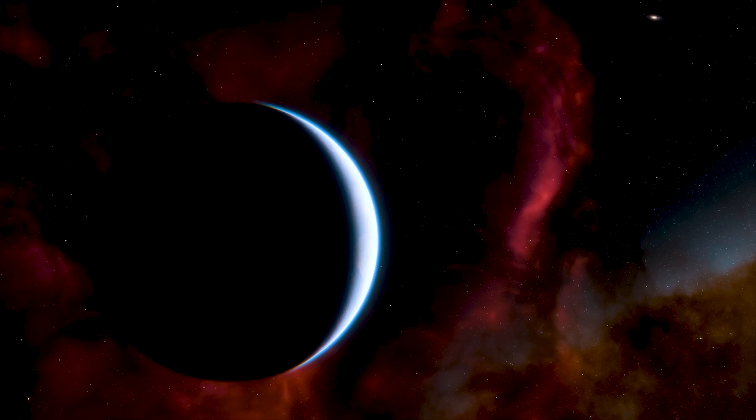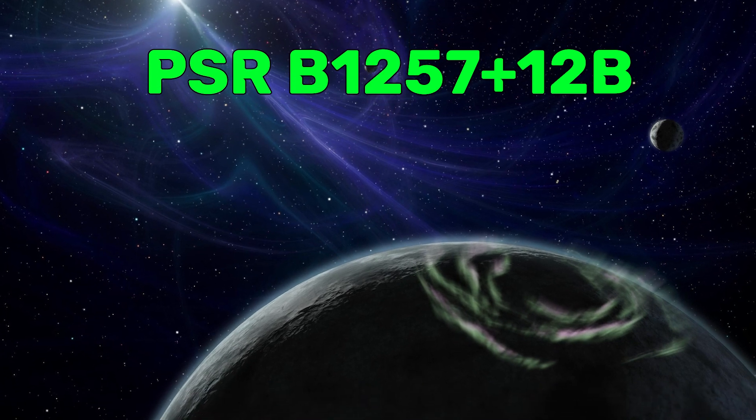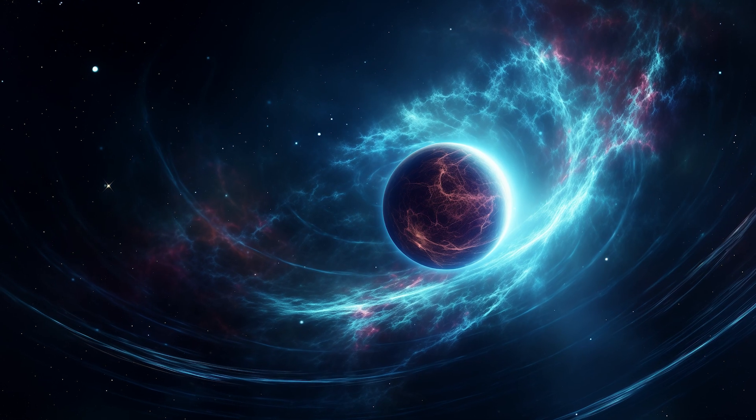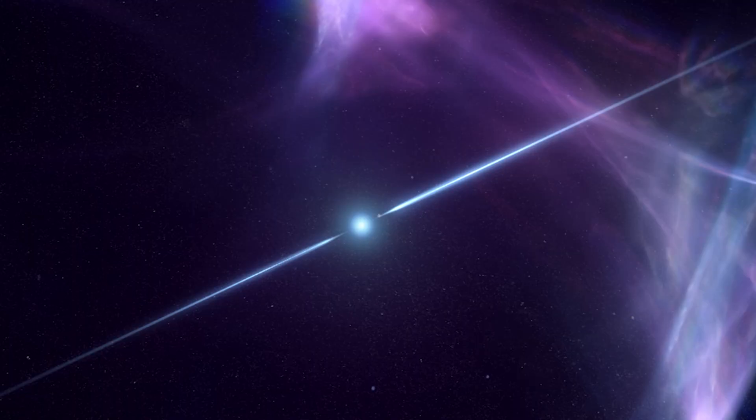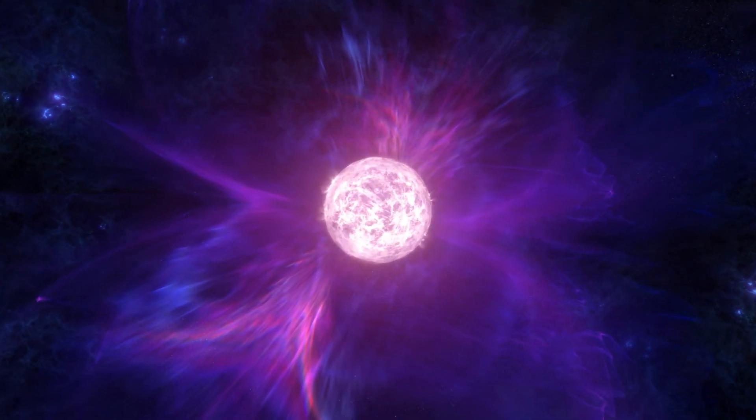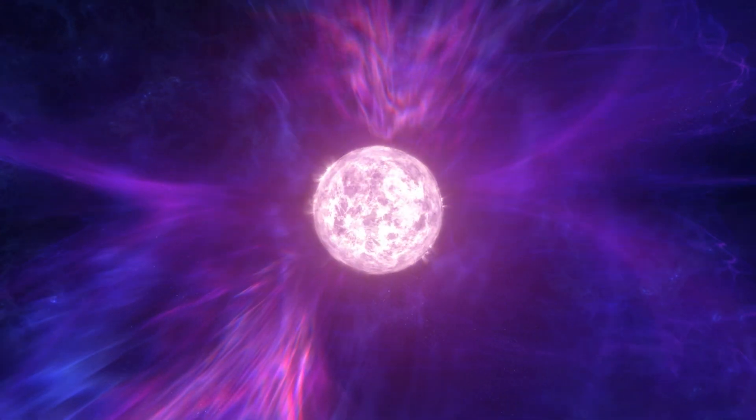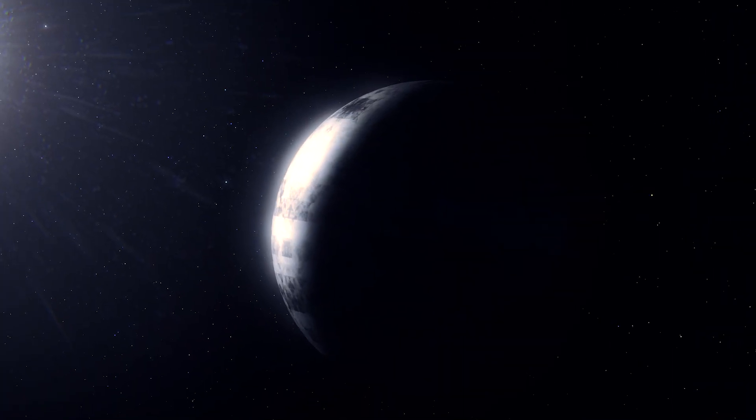But at least it orbits a proper star, unlike PSR B125712b, one of the few known planets that orbits a pulsar, a rapidly rotating neutron star. This neutron star is the remains of a dead star that exploded a long time ago. This planet is constantly being bombarded with deadly radiations.